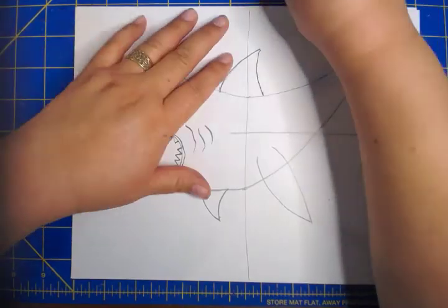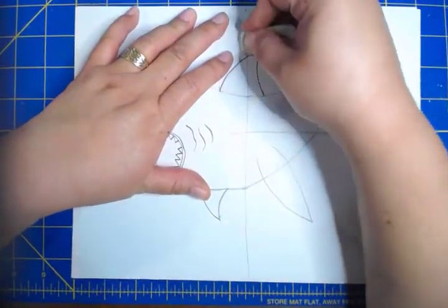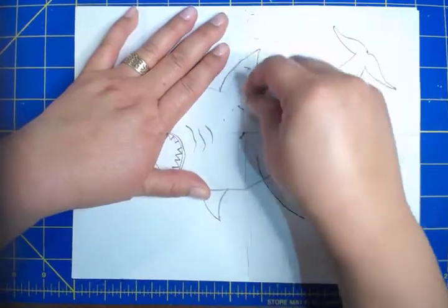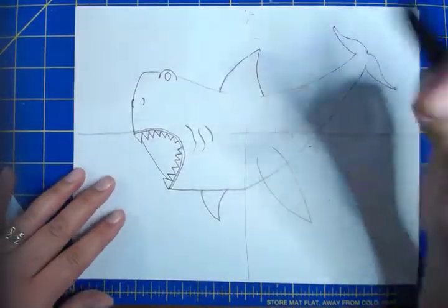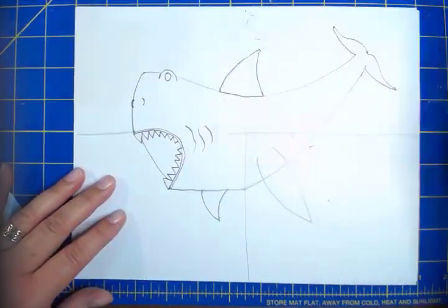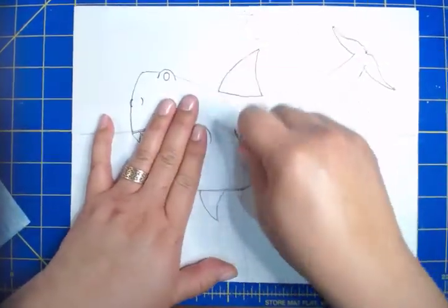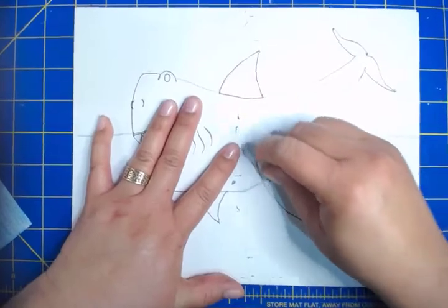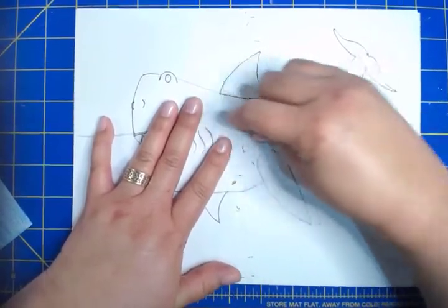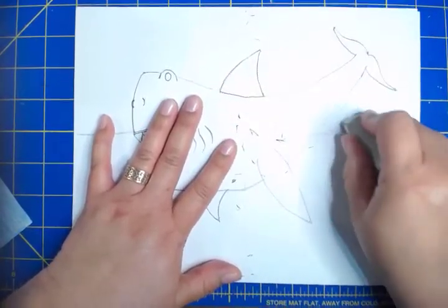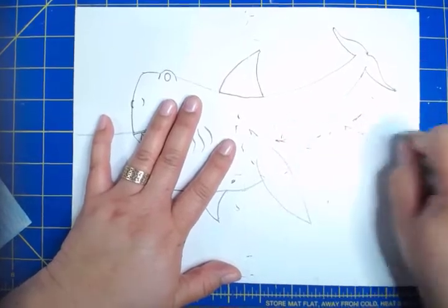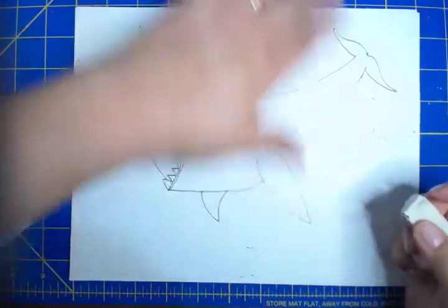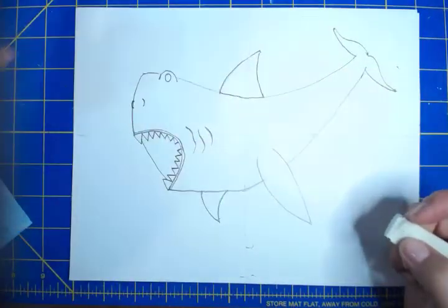So what I'm going to do now is just erase all those extra lines I don't need. And when you're doing your pencil part, the pencil sketch, try not to press very hard on your pencil so it'll make it easier to erase. This is a little hard for me to erase because I'm pressing a lot so you can actually see this on the camera.